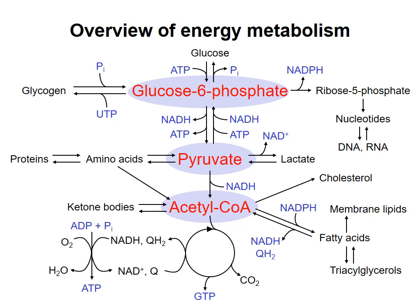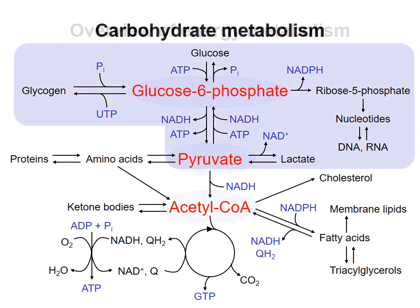Different parts of the diagram are covered in different topics. We'll look at the top part of the diagram in the carbohydrate metabolism topic. This will cover glycogen synthesis and breakdown, glycolysis which goes from glucose to pyruvate, fermentation which goes from glucose to lactate or ethanol, gluconeogenesis in which lactate or pyruvate or some other compounds can be used to make glucose, and the pentose phosphate pathway, which is useful for making NADPH and ribonucleotides.